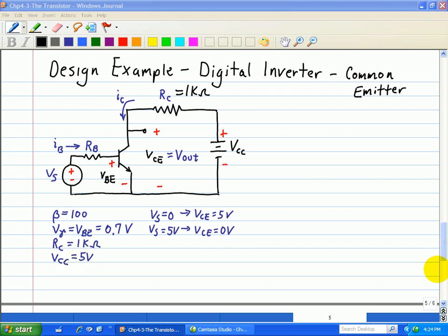So in this problem, we must select an RB, shown here in the resistor connected to the base of the transistor so that the circuit meets these input and output conditions.